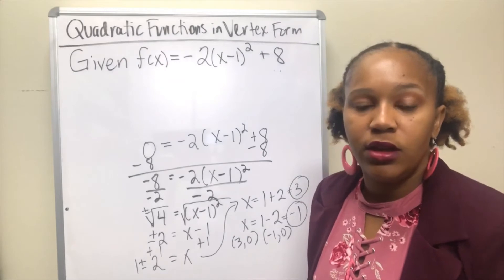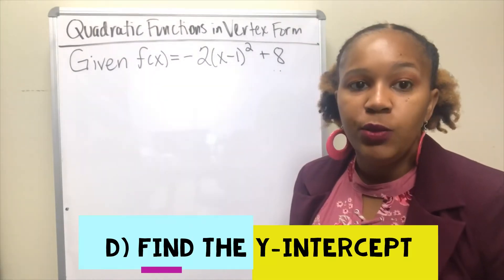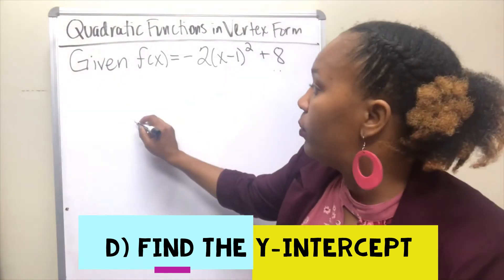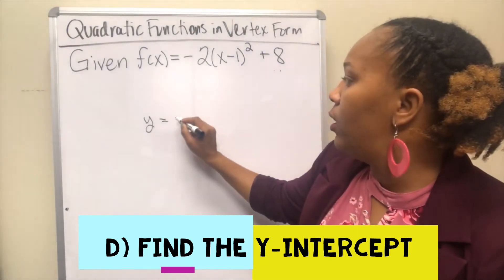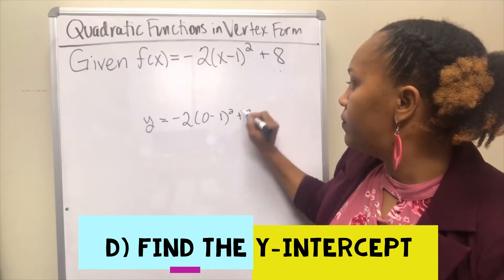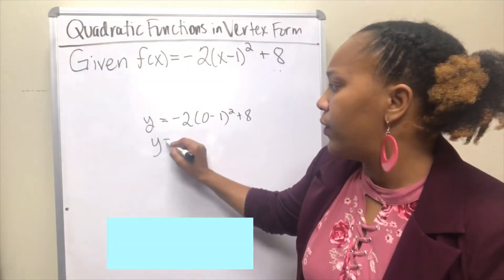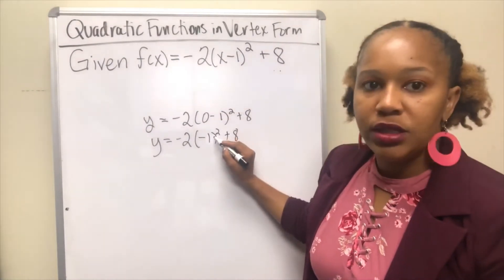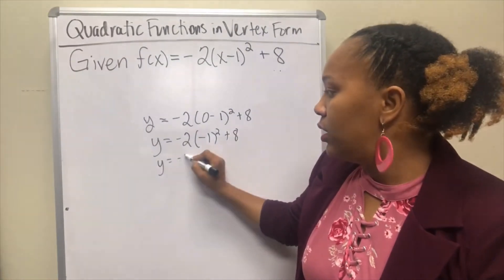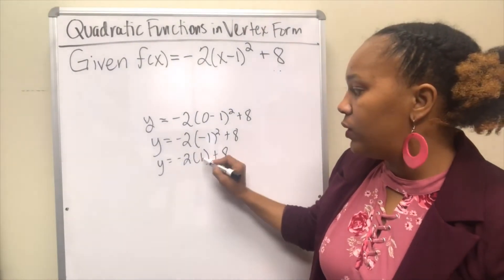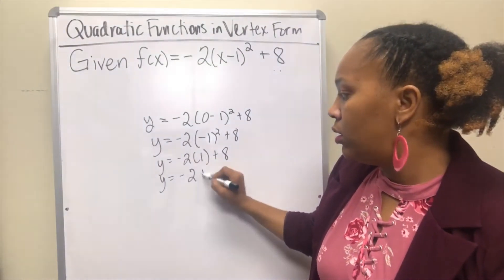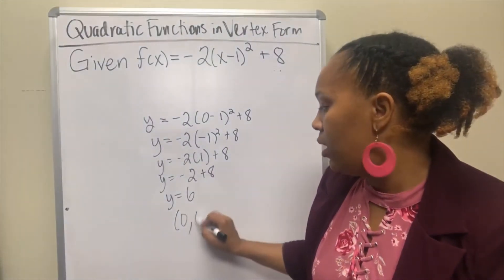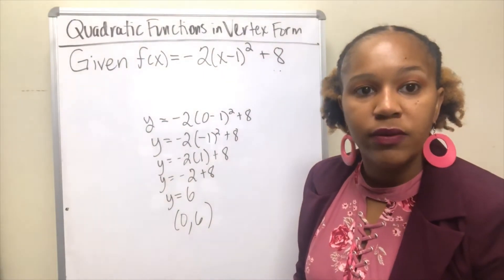For part d, we want to find the y-intercept. To find the y-intercept we let x equal zero. Replacing x with zero: zero minus 1 is negative 1, and negative 1 squared is positive 1. So we have negative 2 times 1 plus 8, which gives negative 2 plus 8 equals 6. The y-intercept is 6, which is the point 0 comma 6.